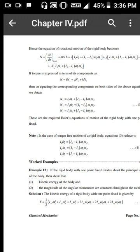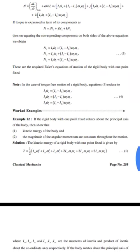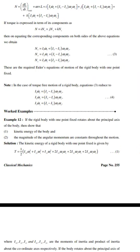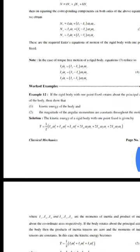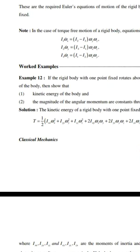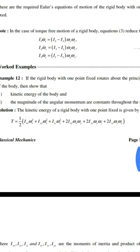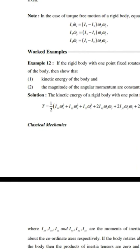Namaskar. Today I will discuss examples on rigid body. If a rigid body with one point fixed rotates about the principal axis of the body, then show that the kinetic energy of the body and the magnitude of the angular momentum are constant throughout the motion.